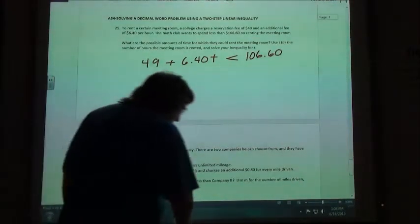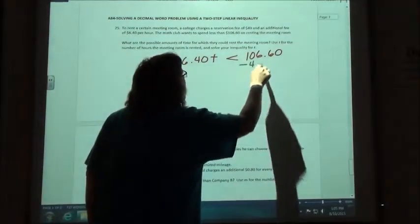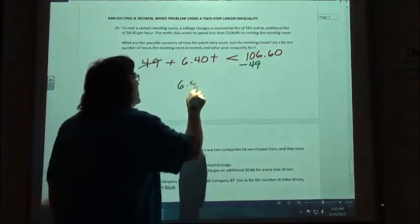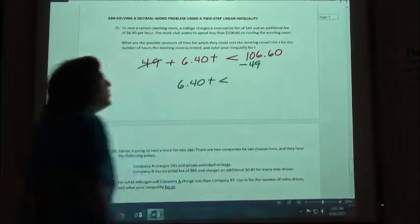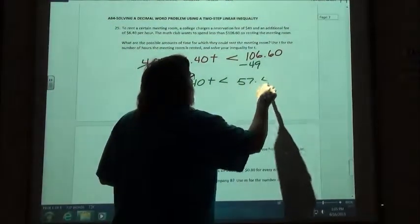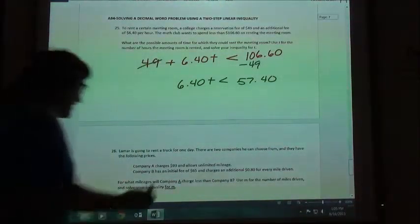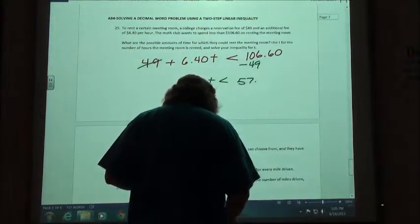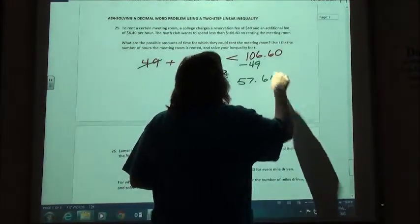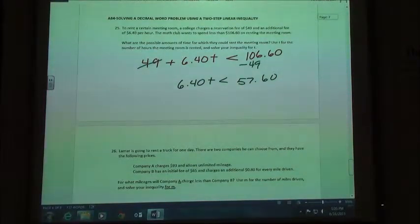So we've translated it into our inequality, now we just have to solve it. So we're going to start by subtracting our 49. I'm going to let you subtract that for me. 106.60 minus 49 would be? 57.6. 50 what? 57. 40? Is that what you said? No? 57.60. All right, how about I subtract? 0.6, that's what she said. Okay, 57.6, see there's a fan up there I have a hard time hearing.